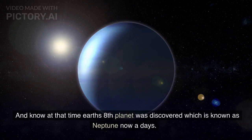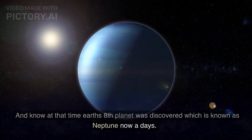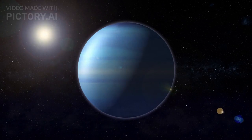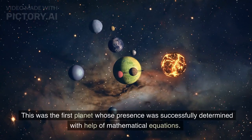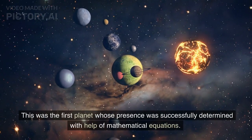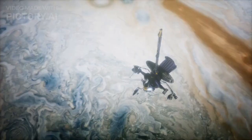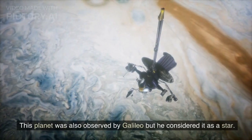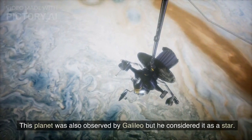And so, at that time, Earth's eighth planet was discovered, which is known as Neptune nowadays. This was the first planet whose presence was successfully determined with the help of mathematical equations. This planet was also observed by Galileo, but he considered it a star.